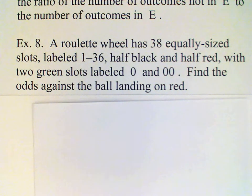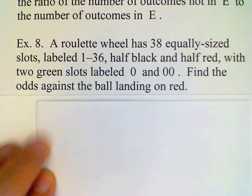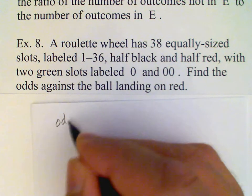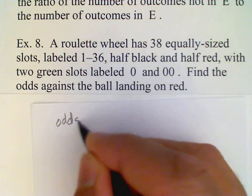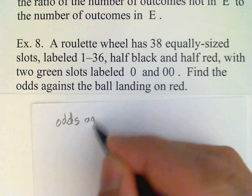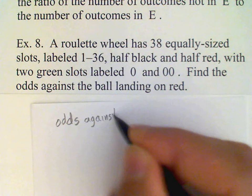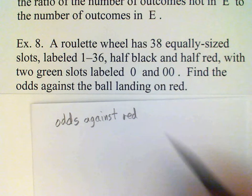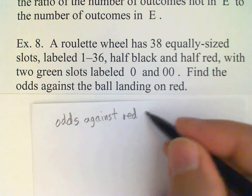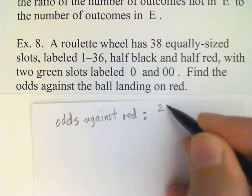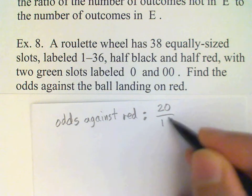We simply take the ratio of the number of outcomes not in E — in other words, the outcomes that are not red — to the number of outcomes that are red. Since there are 18 slots that are red and 38 in all, we have 20 that are not red and 18 that are red, so the odds against red are 20 to 18, which simplifies to 10 to 9.